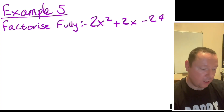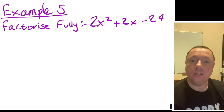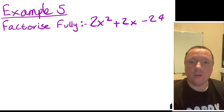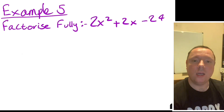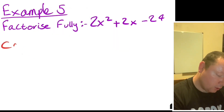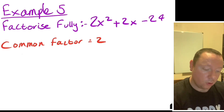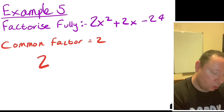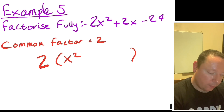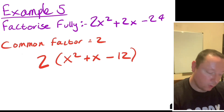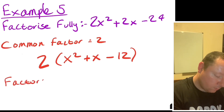Example 5, the last example: factorise fully 2x squared plus 2x minus 24. I said we're only doing ones where the coefficient of x squared is 1 — but this one we can still do. If you remember from a previous video, if there's a common factor, we do that first. This example has a common factor of 2, since 2 goes into 2x squared, 2x, and minus 24. Taking out 2 gives 2 times open bracket x squared plus x minus 12. So we're now factorising x squared plus x minus 12.